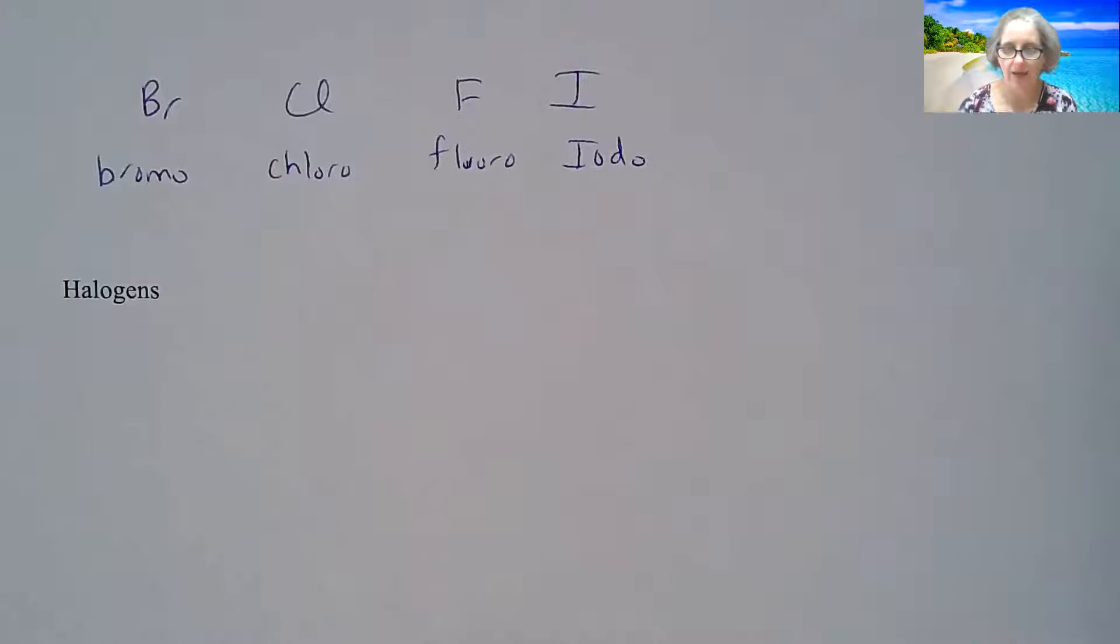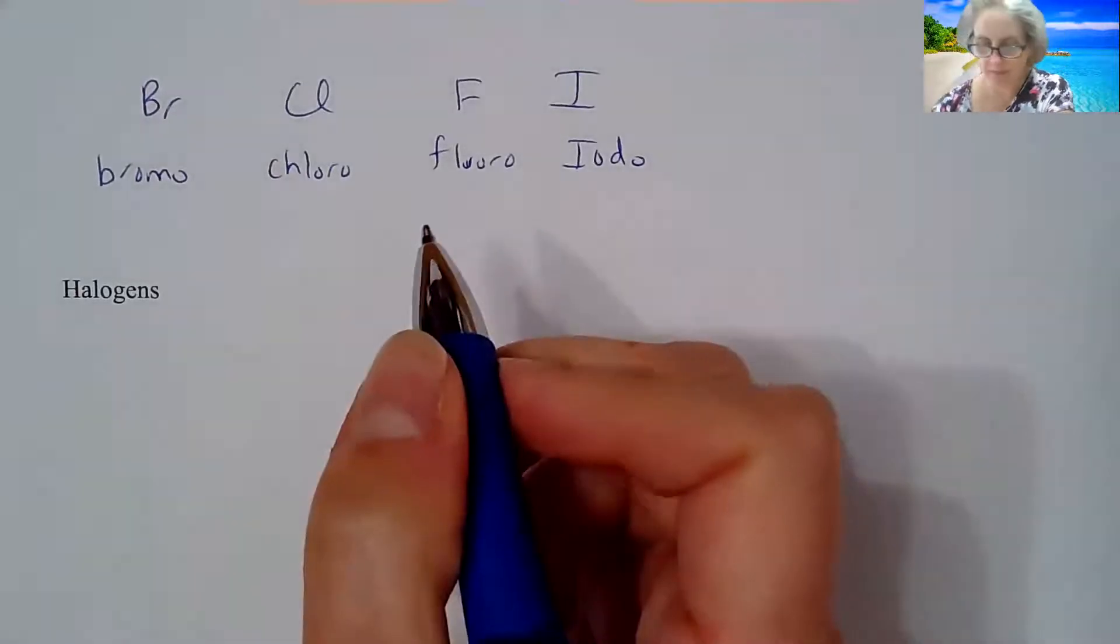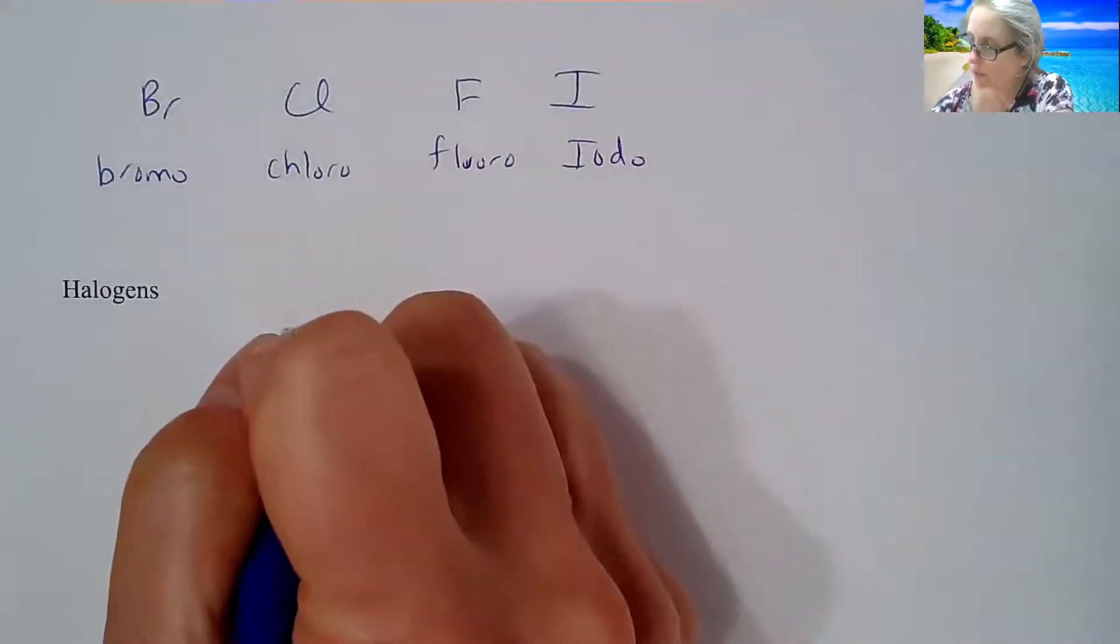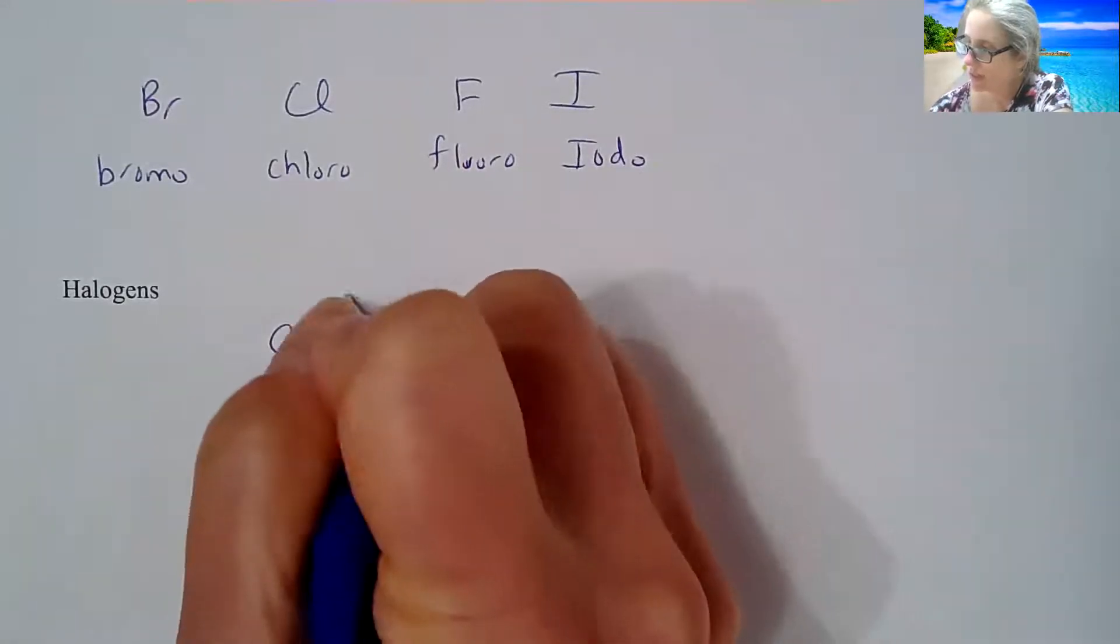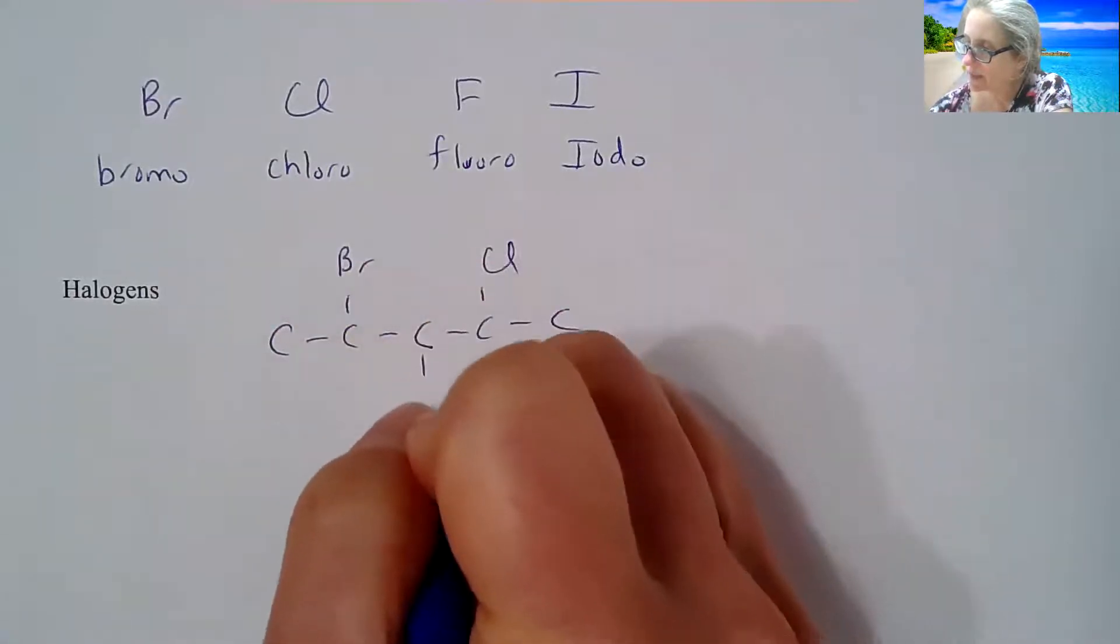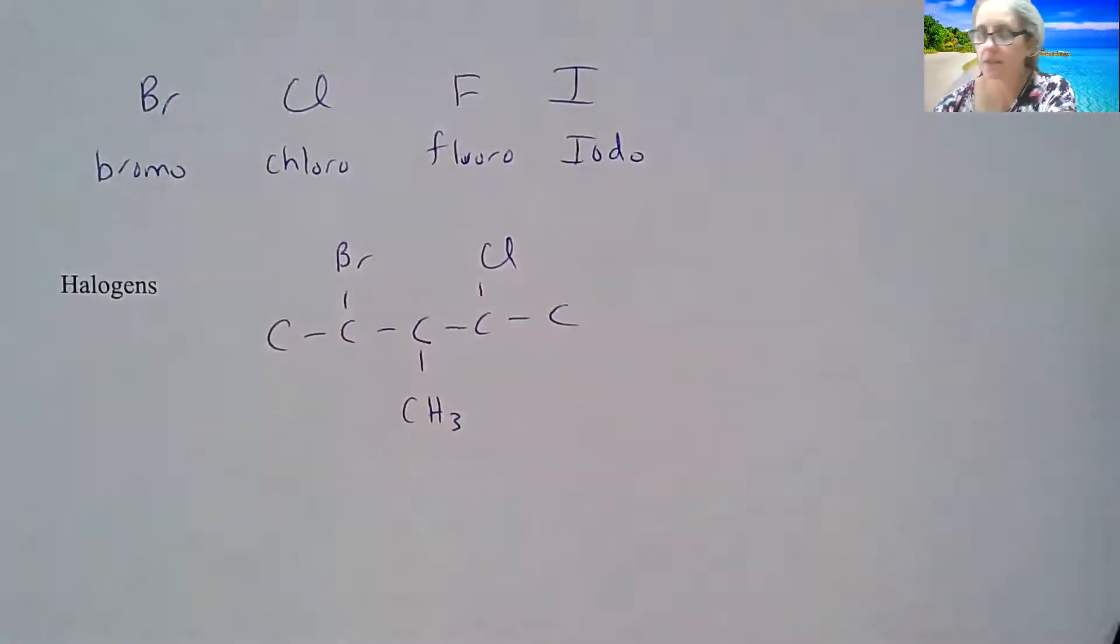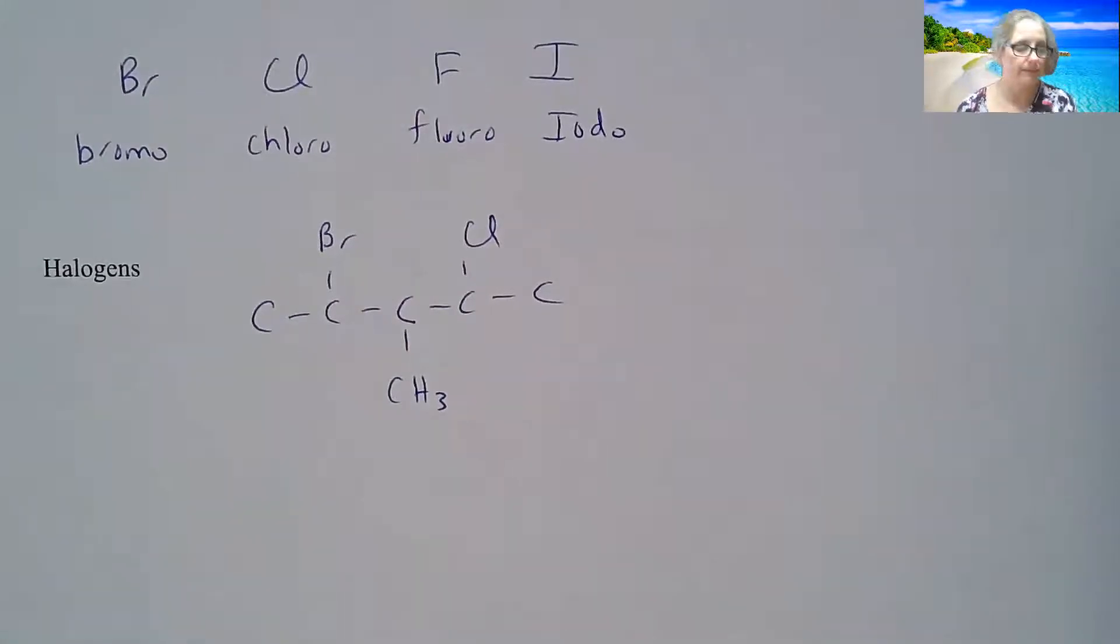So some of these molecules are going to have these in them. So let me draw a molecule with some halogens in them and kind of show you, again, the good news is it's going to follow the same system that we have seen before.